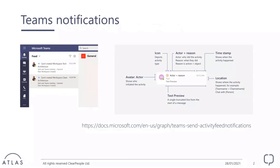We all know what a Teams notification is — we get a bunch of them at the end of the day. Here on the screen you can see the anatomy. There's the avatar, which is basically the image of the user. The icon, which is the Teams application sending the notification. Then actor plus reason — the actor who did the activity and text with the reason of the notification, a timestamp, and more text with the location and the text preview. The location is usually something like your Teams channel and so on.